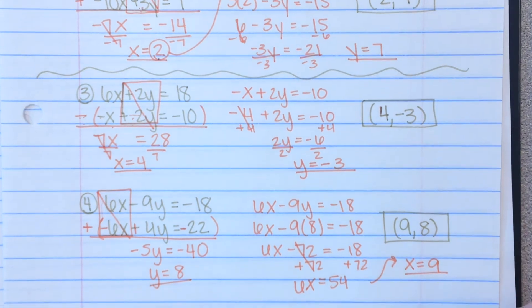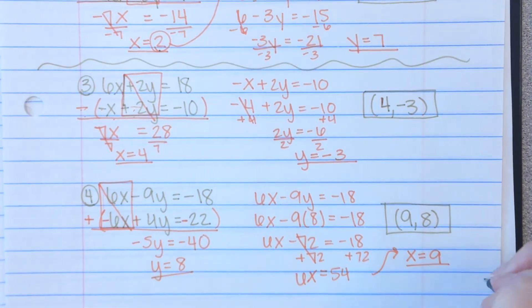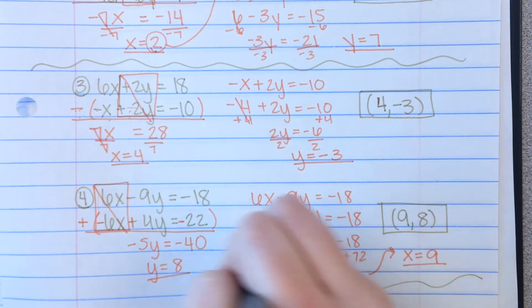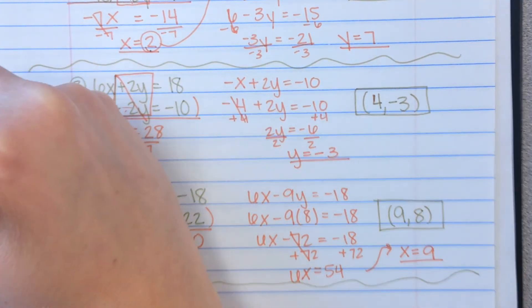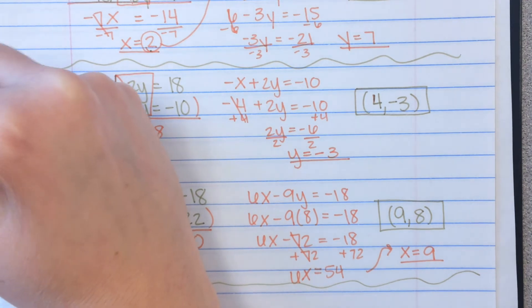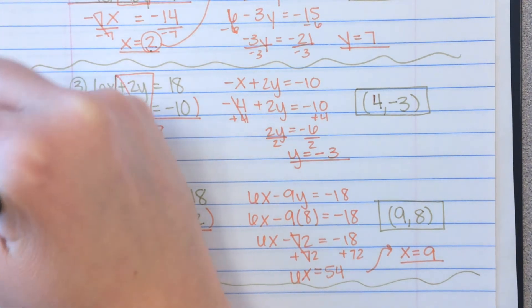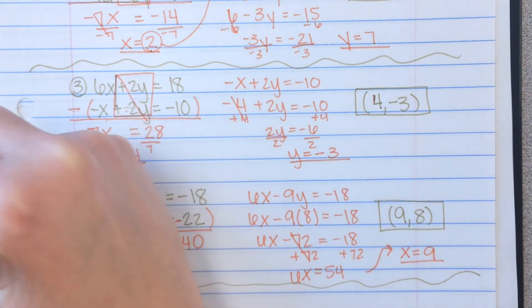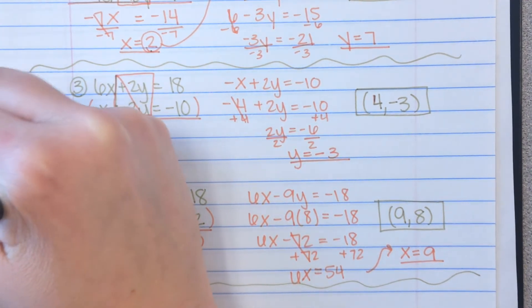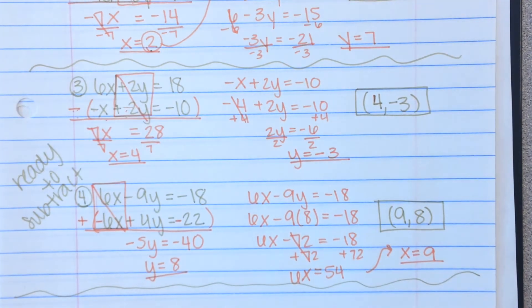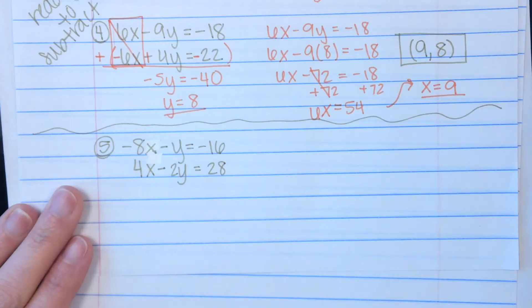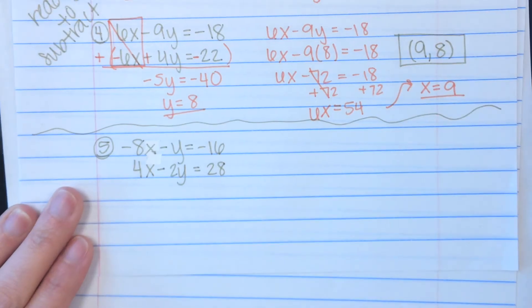Examples 3 and 4 were equations that were ready to subtract — you had matching coefficients with the same sign.